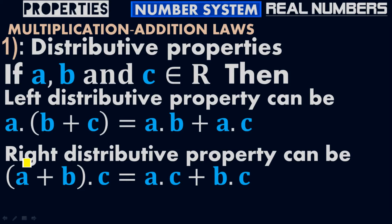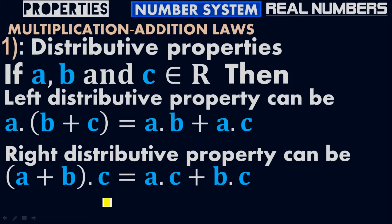For the right distributive property: (a + b) times c equals a times c plus b times c. The left side equals the right side. This is called the right distributive property.